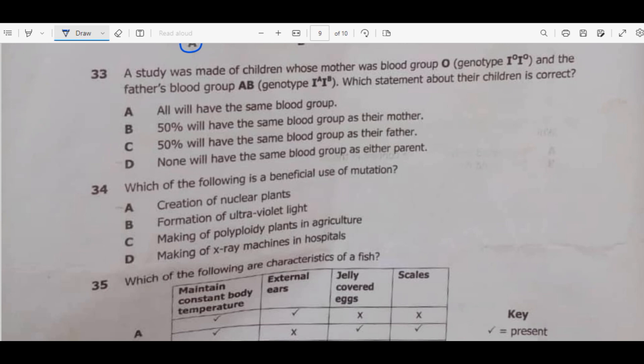Question 33. A study was made of children whose mother was blood group O and the father's blood group AB. Which statement about their children is correct? So the father is AB, the mother is O. If you are to make a genetic diagram, there is a chance of having the same blood group, A O which is A, B O. Another B O. Now let's look at the multiple choice. A O, we have the same blood group? No. B, 50% have the same blood group as their mother? No. We can see that there was no chance of having the same blood group as their mother. C, 50% have the same blood group as their father? No. Then the answer is D, none who have the same blood group as either parent.